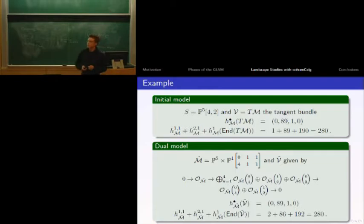Let me give a simple example. Take a quadric in dimension two, intersection of degree four and degree two hypersurfaces in P5, equipped with a tangent bundle. We calculate the cohomology. The Hodge numbers are 89 and 1. The dimension of our moduli space is the sum of Hodge numbers plus bundle deformations, which ends up at 280 in total.